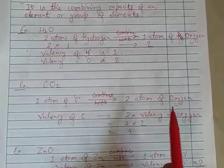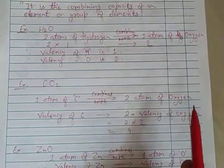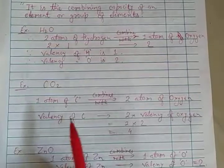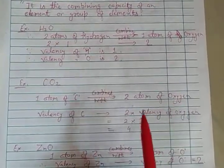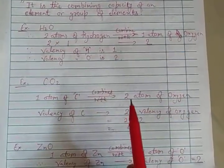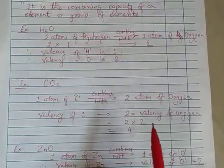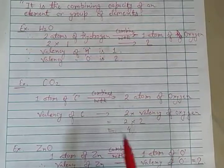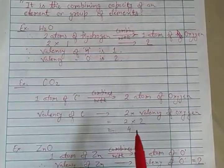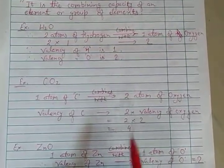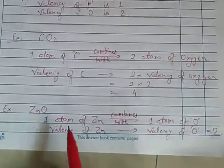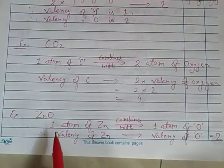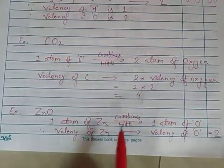We know that the valency of oxygen is 2, so 2 atoms: 2 into 2 will become 4. So the valency of carbon is 4. One more example — zinc oxide. In zinc oxide, 1 atom of zinc is combining with 1 atom of oxygen.